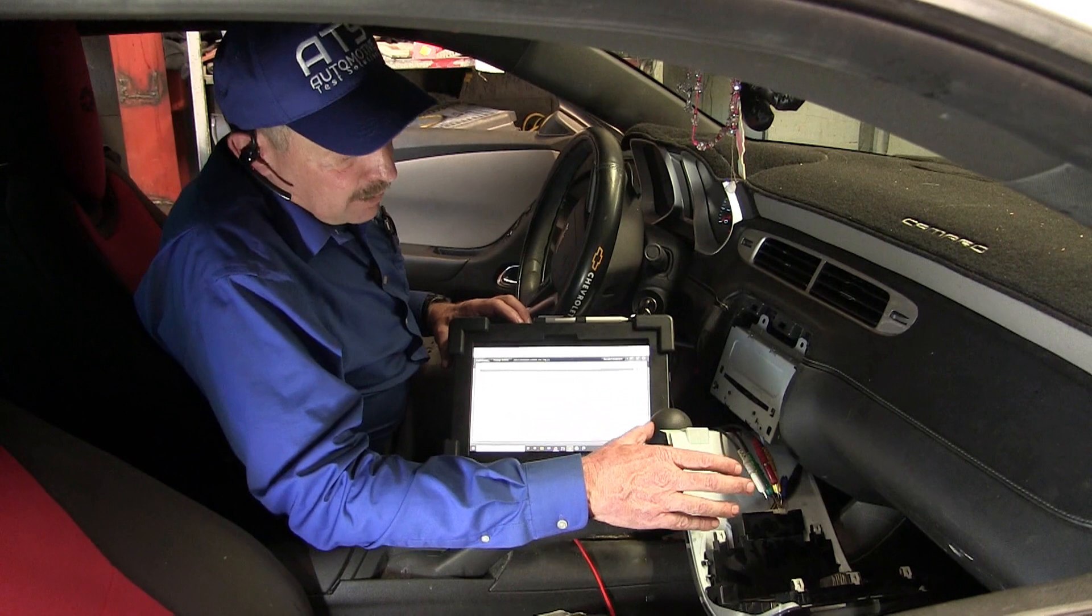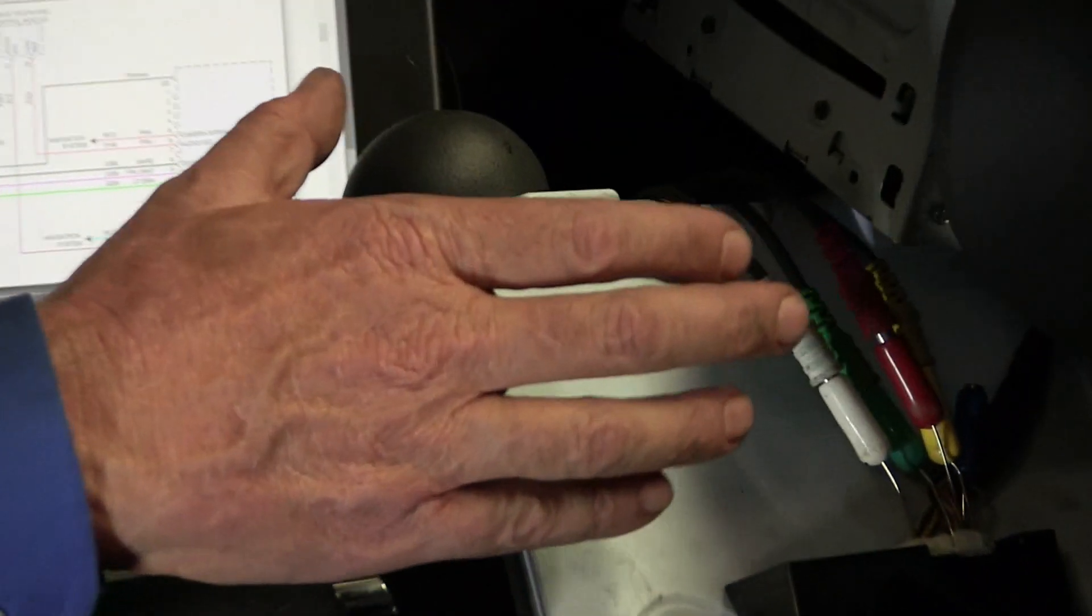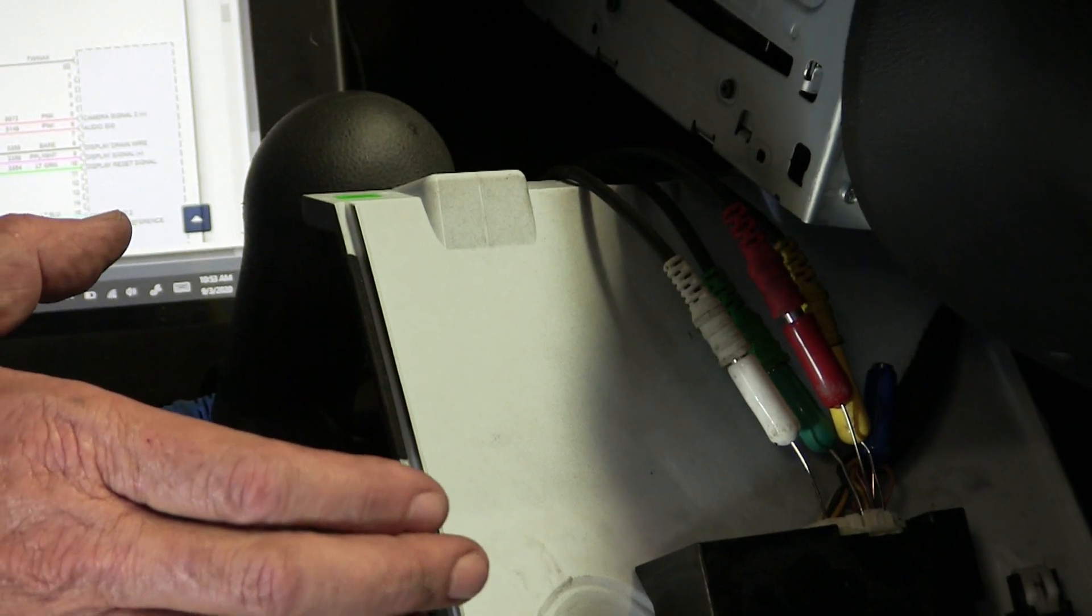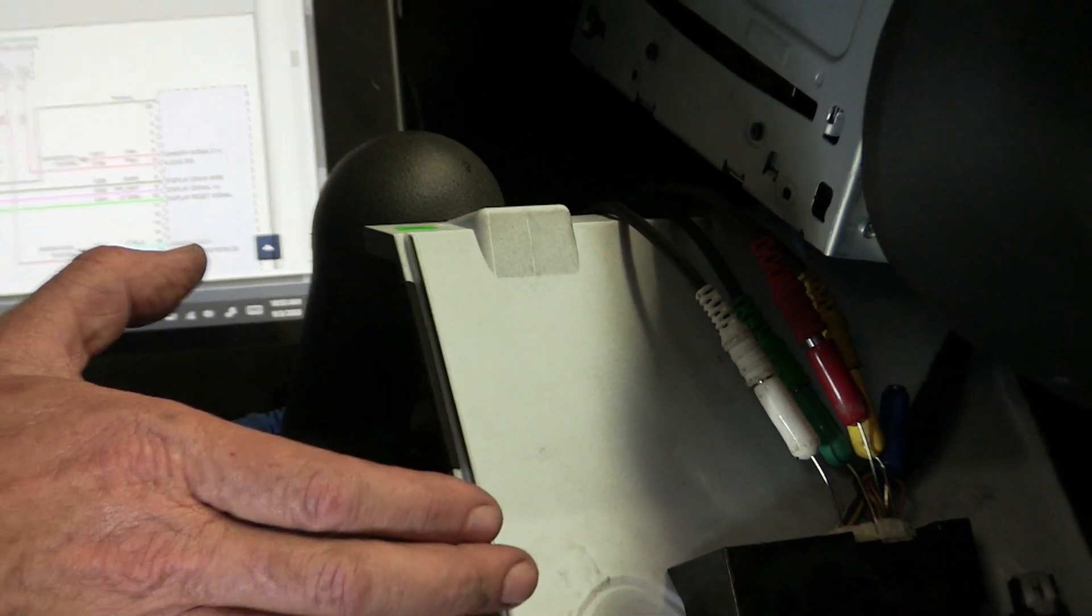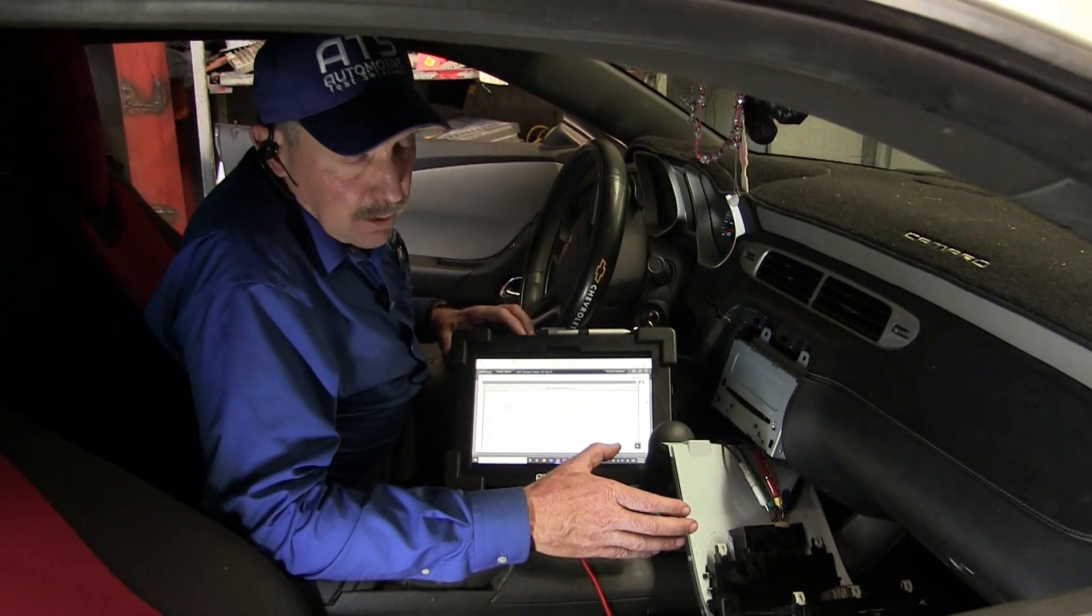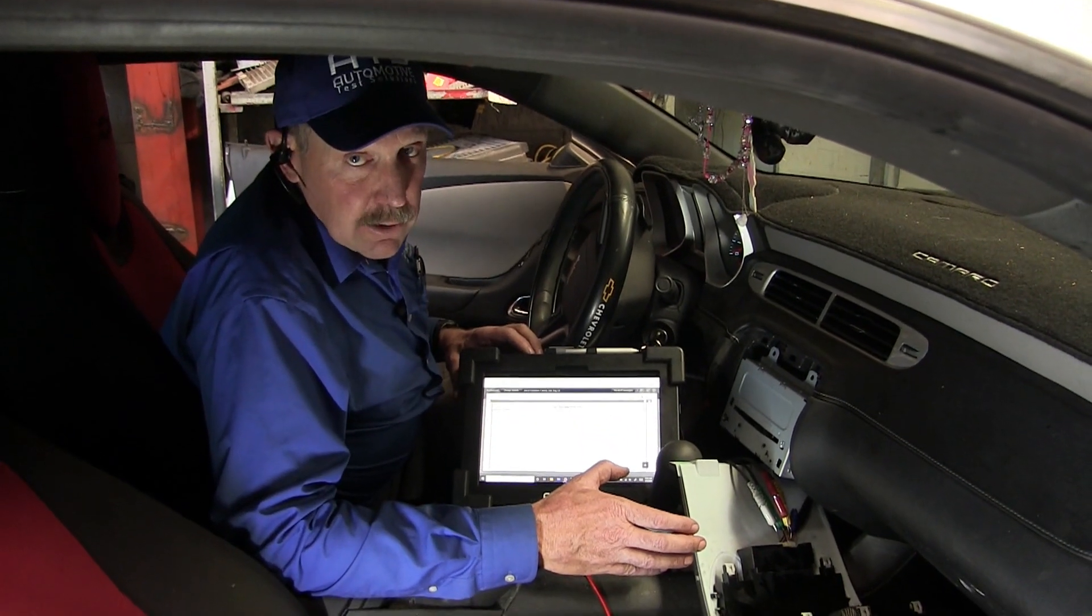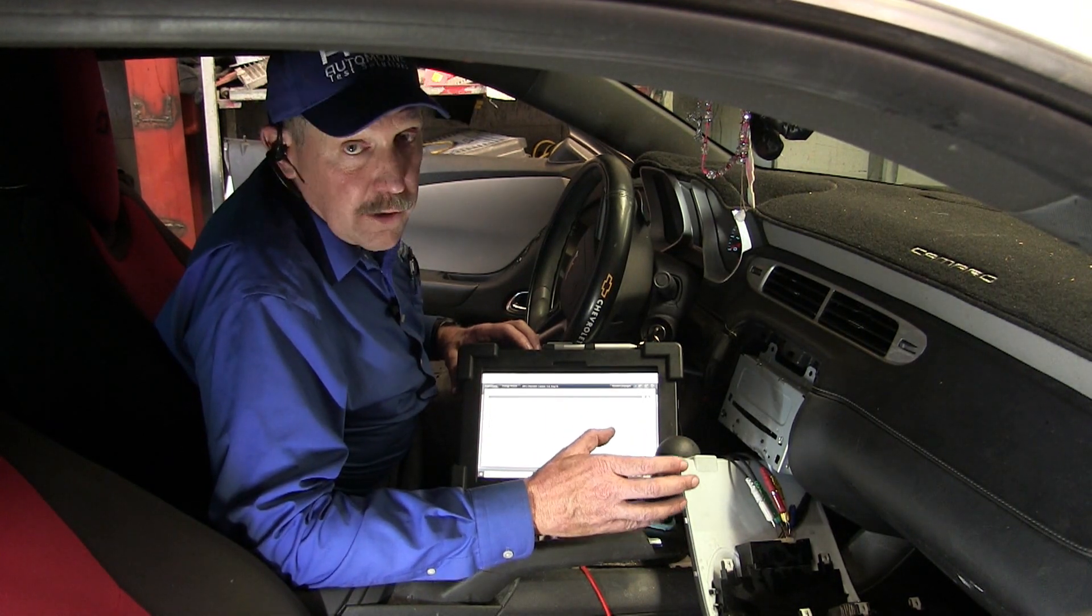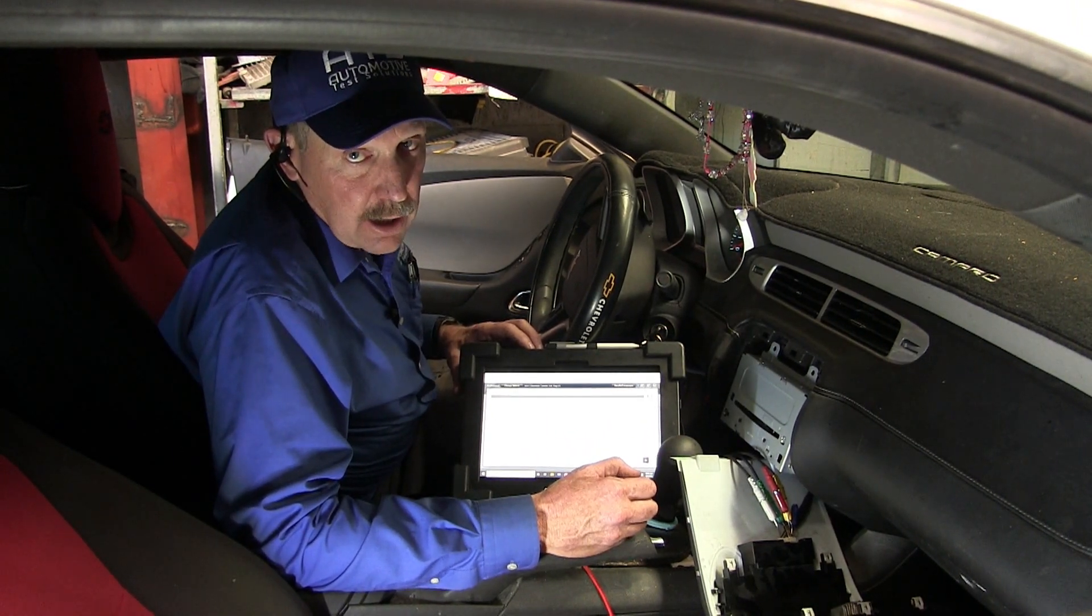So basically we've back probed this system. The blue lead is on the power, the white lead is on the ground, the red lead is CAN high, the yellow is CAN low, and the green lead is the enable. So what we're going to do now is get this data up on the scope so we can figure out what's going wrong with this radio and why it's cutting on and off.